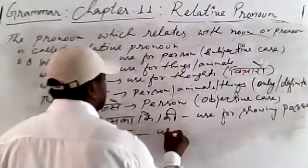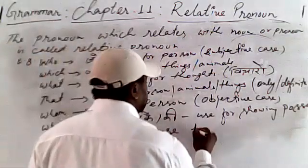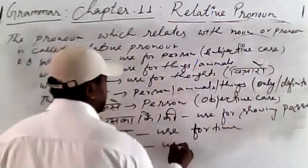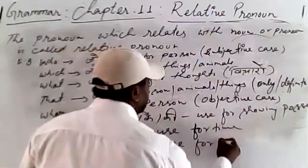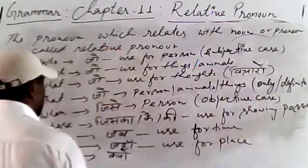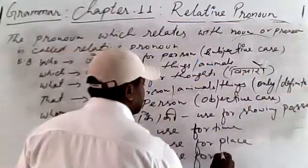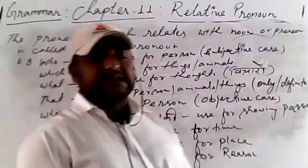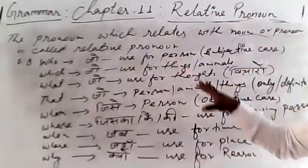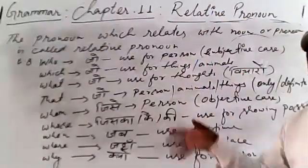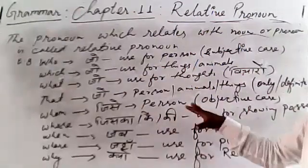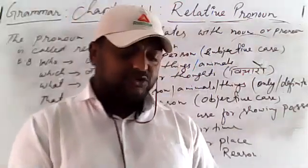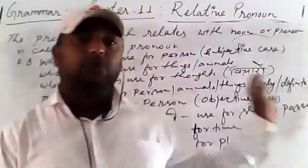Where = jahan, used for place. Why = kyun, used to tell the reason. That's all class. These are all the things we have learned in this chapter. I am going to send you all the examples I have taught on the board.